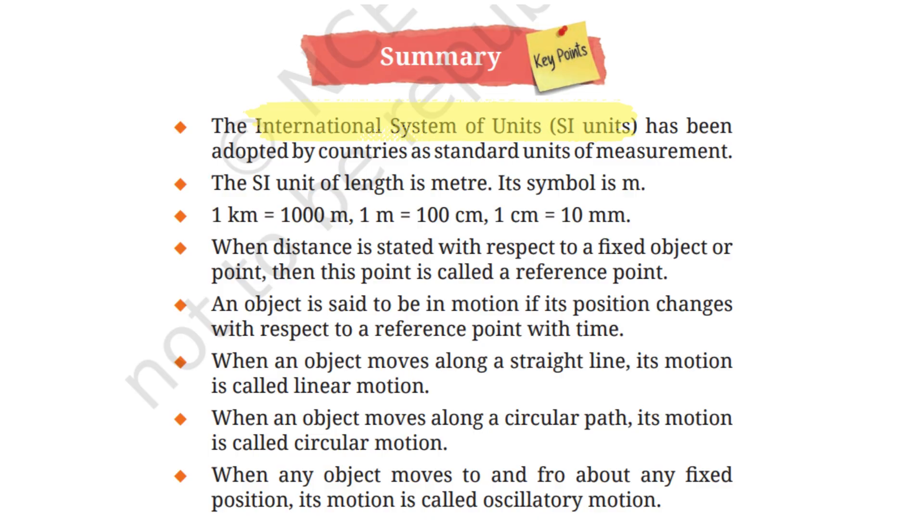The International System of Units, i.e., SI Units, has been adopted by countries as standard units of measurement. The SI unit of length is meter and its symbol is small m. 1 km equals 1000 m, 1 m equals 100 cm, and 1 cm equals 10 mm.